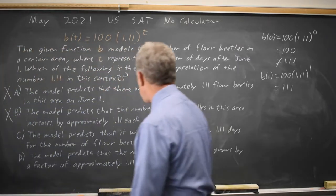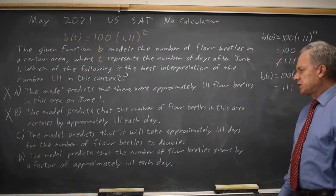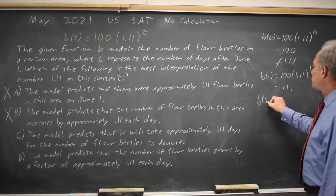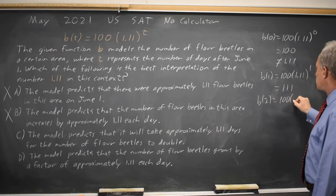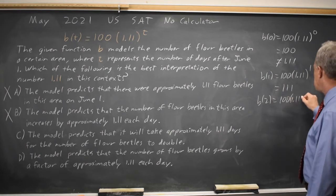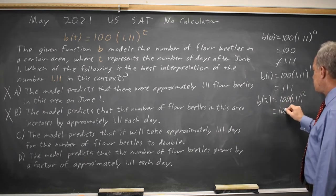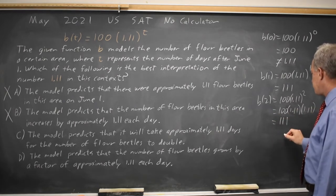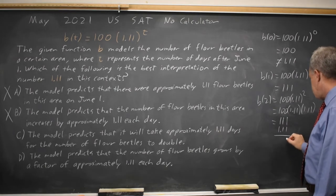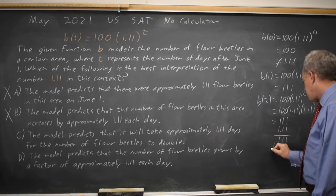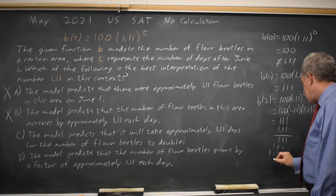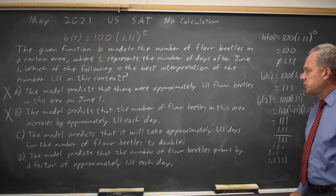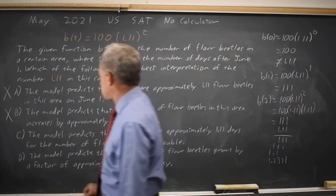Choice C: the model predicts it will take approximately 1.11 days for the number to double. B(2) is 100 times 1.11 squared, which is 100 times 1.11 times 1.11 again, which is 111 times 1.11, which is certainly nowhere near doubling, so choice C is not correct.